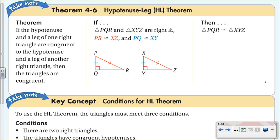This is the hypotenuse-leg theorem, abbreviated HL. The theorem says: if the hypotenuse and a leg of one right triangle are congruent to the hypotenuse and a leg of another right triangle, then the triangles are congruent. Here in picture form, triangle PQR and triangle XYZ — this leg and this leg are congruent, and both hypotenuses are congruent, so the triangles are congruent by HL.